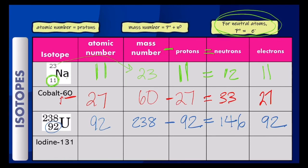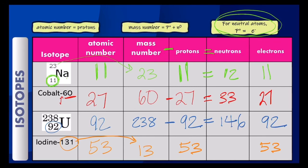Finally, let's take a look at iodine-131. Iodine's atomic number is 53, which means it also has 53 protons. Because there is no positive or negative symbol on the iodine, it also has 53 electrons. The 131 represents the mass number of this isotope, so you write 131 in that spot. To find the neutrons, subtract 131 minus 53, which gives us 78 neutrons.